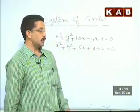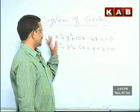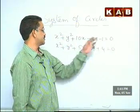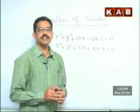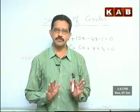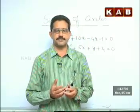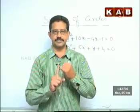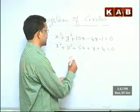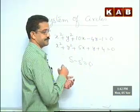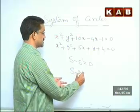Find the limiting points of the two given circles. There are three steps. Step 1: find the radical axis using S minus S′ = 0. Step 2: take the system of circles as S + λL = 0. Step 3: find the radius and center from this system.